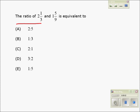The ratio of 2 1/3 and 1 5/9 is equivalent to which one of these? So we have two mixed fractions: 2 1/3 is to 1 5/9.